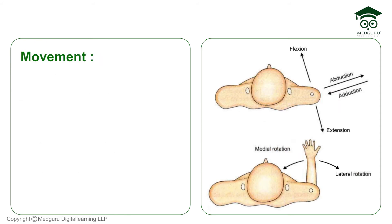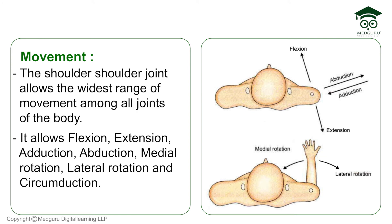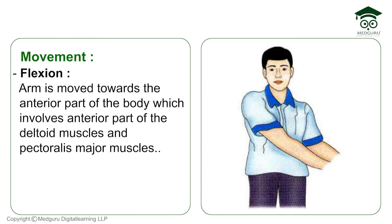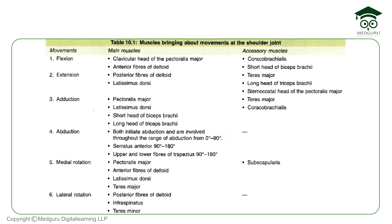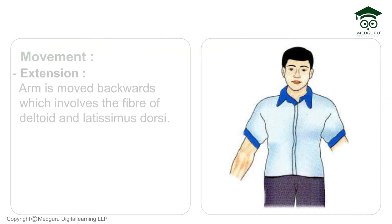The shoulder joint undergoes the widest range of movement of any joint in the body. Movements include flexion, extension, adduction, abduction, medial rotation, lateral rotation, and circumduction. Flexion means taking the arm towards the anterior part of your body — towards your chest and thorax. The main muscles for flexion are the anterior fibers of deltoid and pectoralis major.